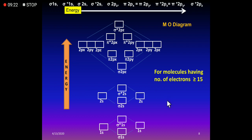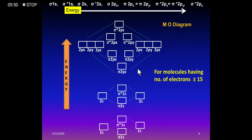For diatomic molecules with a total of 20 electrons, the atomic orbitals involved are 1s, 2s, 2px, 2py, and 2pz. When 1s and 1s combine, they form σ(1s) and σ*(1s). When 2s and 2s combine, they form σ(2s) and σ*(2s).